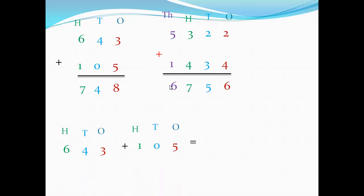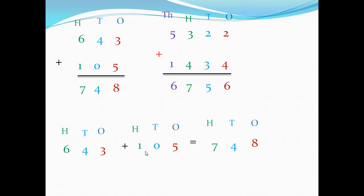Three digits plus three digits in the horizontal method — same steps, start from units. In 643, the first digit on the right is three, in the ones place. In 105, the first digit on the right is five. Three plus five equals eight in the ones. Next, four in the tens plus zero in the tens equals four. Last, six plus one in the hundreds equals seven.